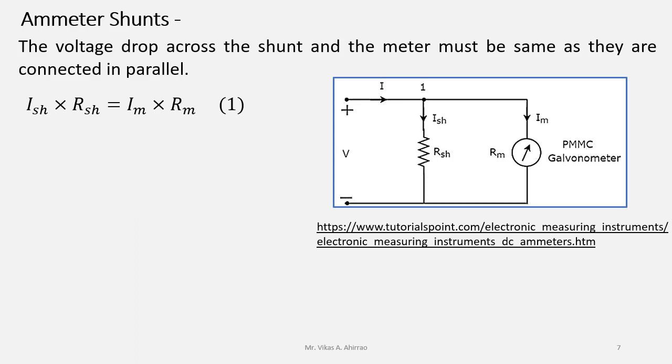But the shunt current Ish can be written as I minus Im. Substituting the value of Ish in equation number 1,